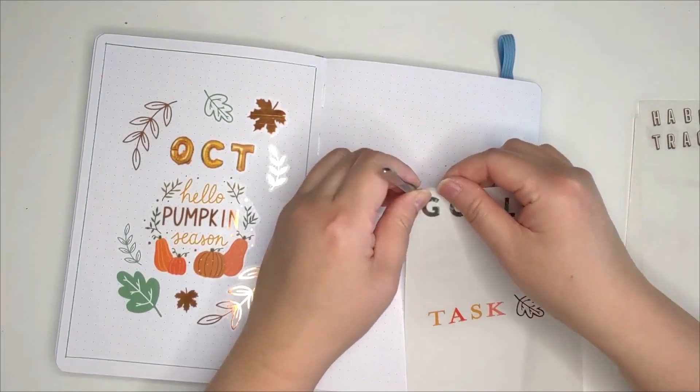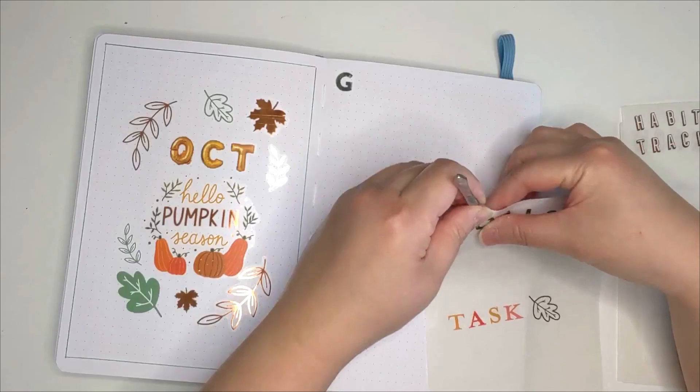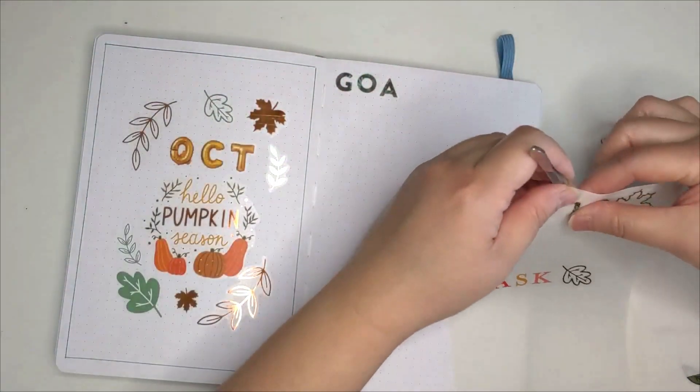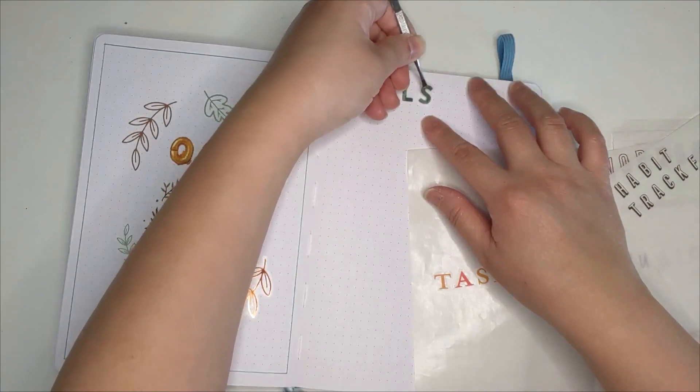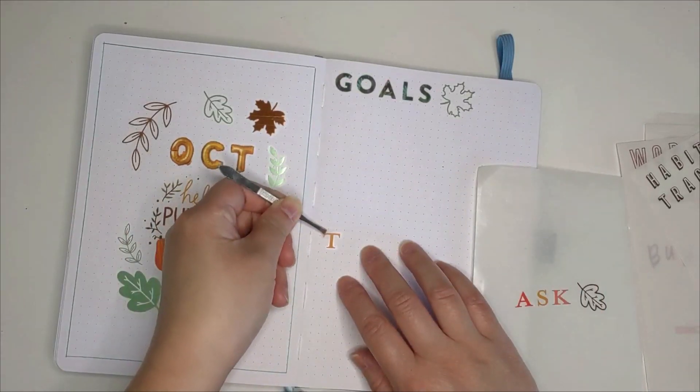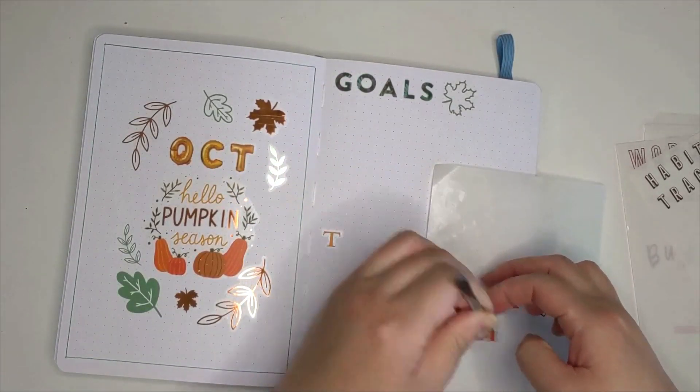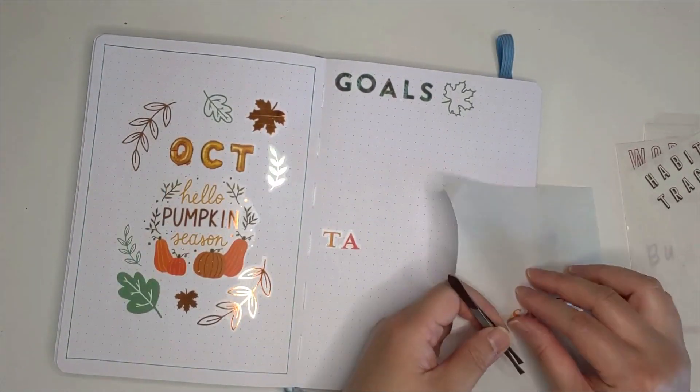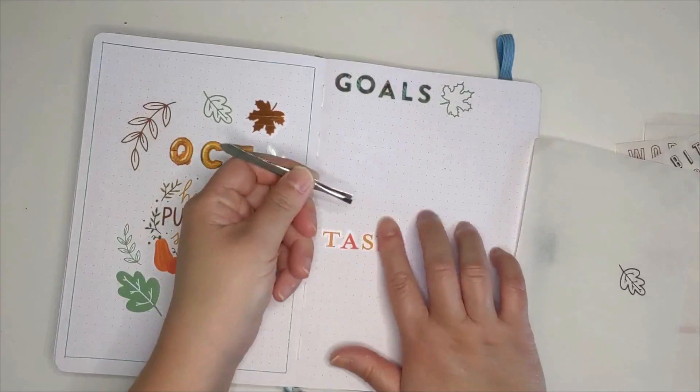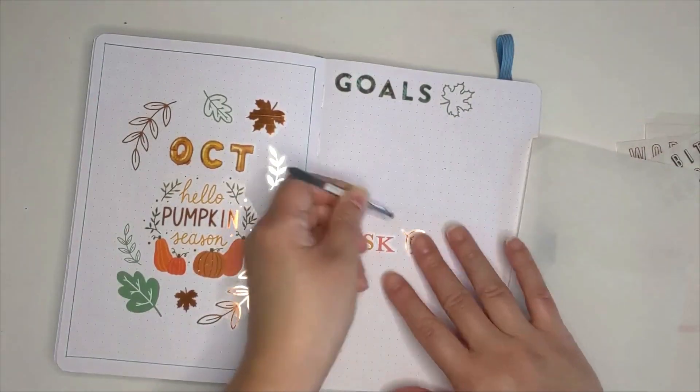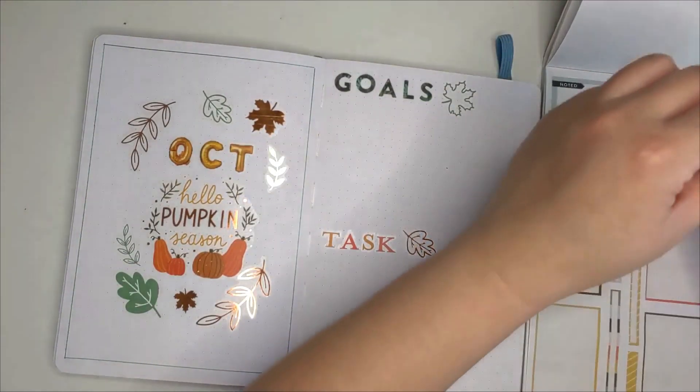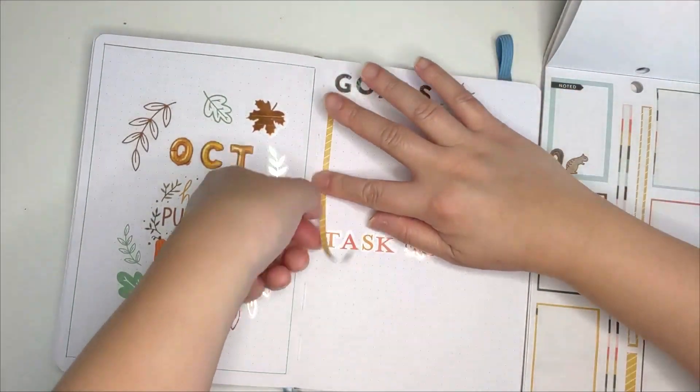Next page is the goals and task page. I'm using the same kind of leaves so that it matches with the cover page, and then for the headings I tried to choose the same color scheme. It felt a little bare, so I looked for a washi strip to add a little more color to the page.